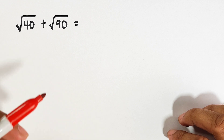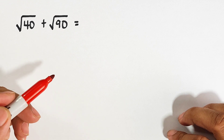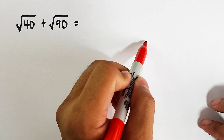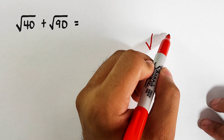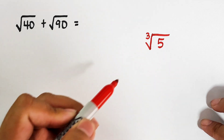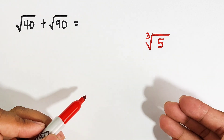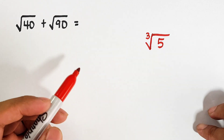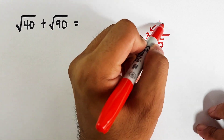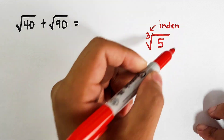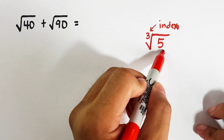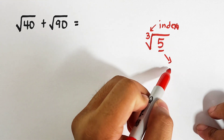We can add or subtract radicals if their indices and radicands are the same. For example, take the cube root of 5. The number outside the radical sign is your index, while the number inside the radical sign is the radicand.